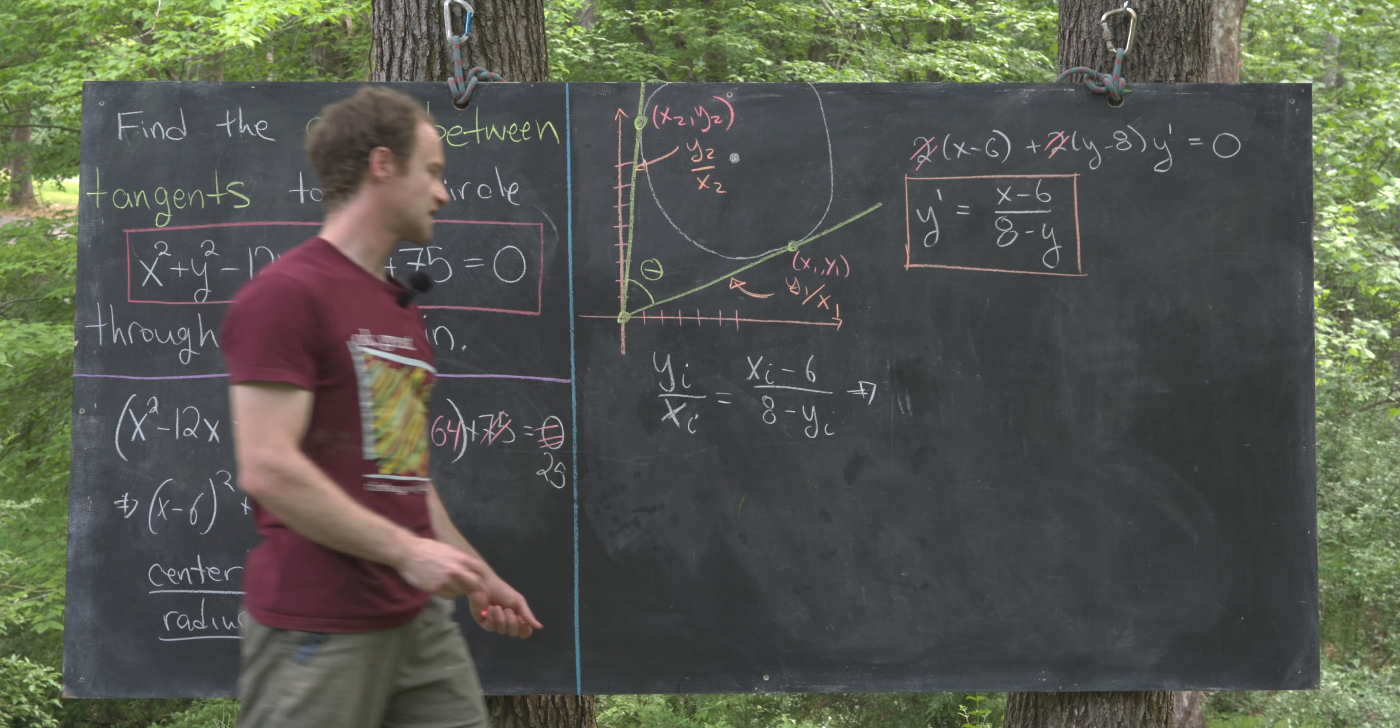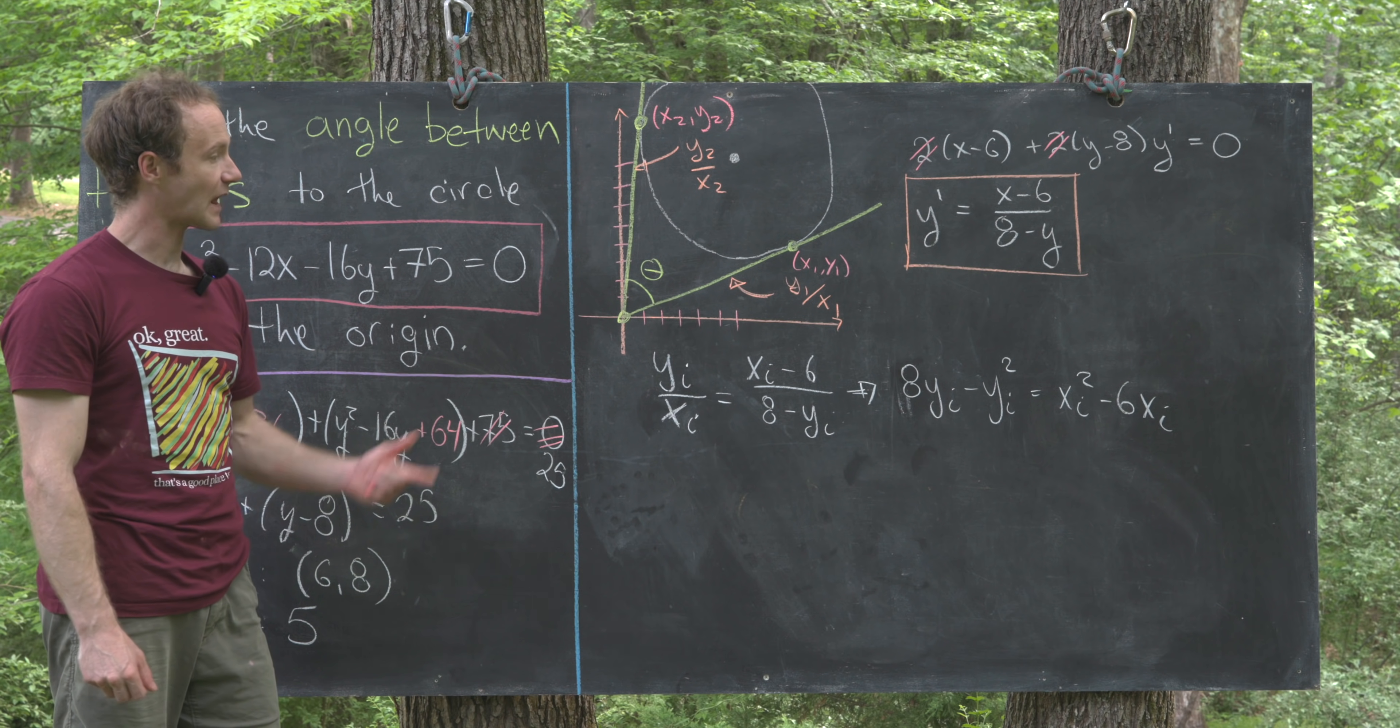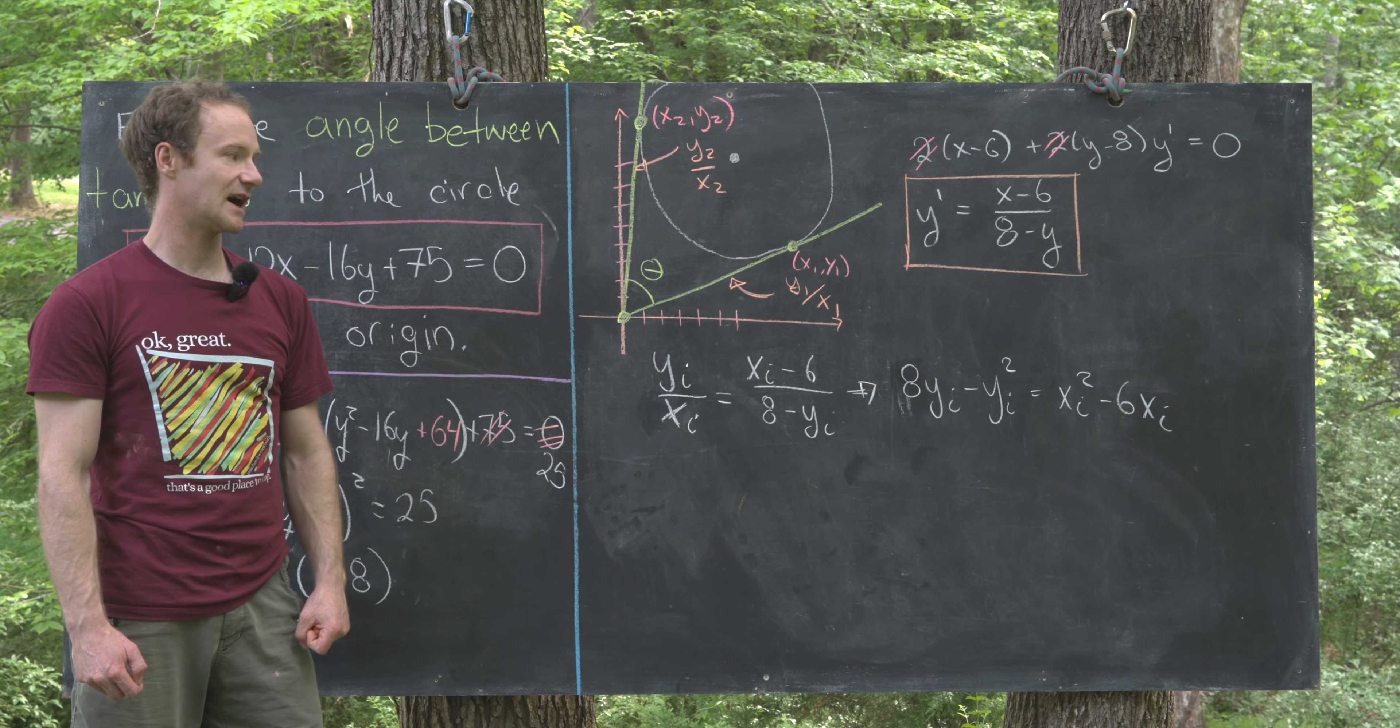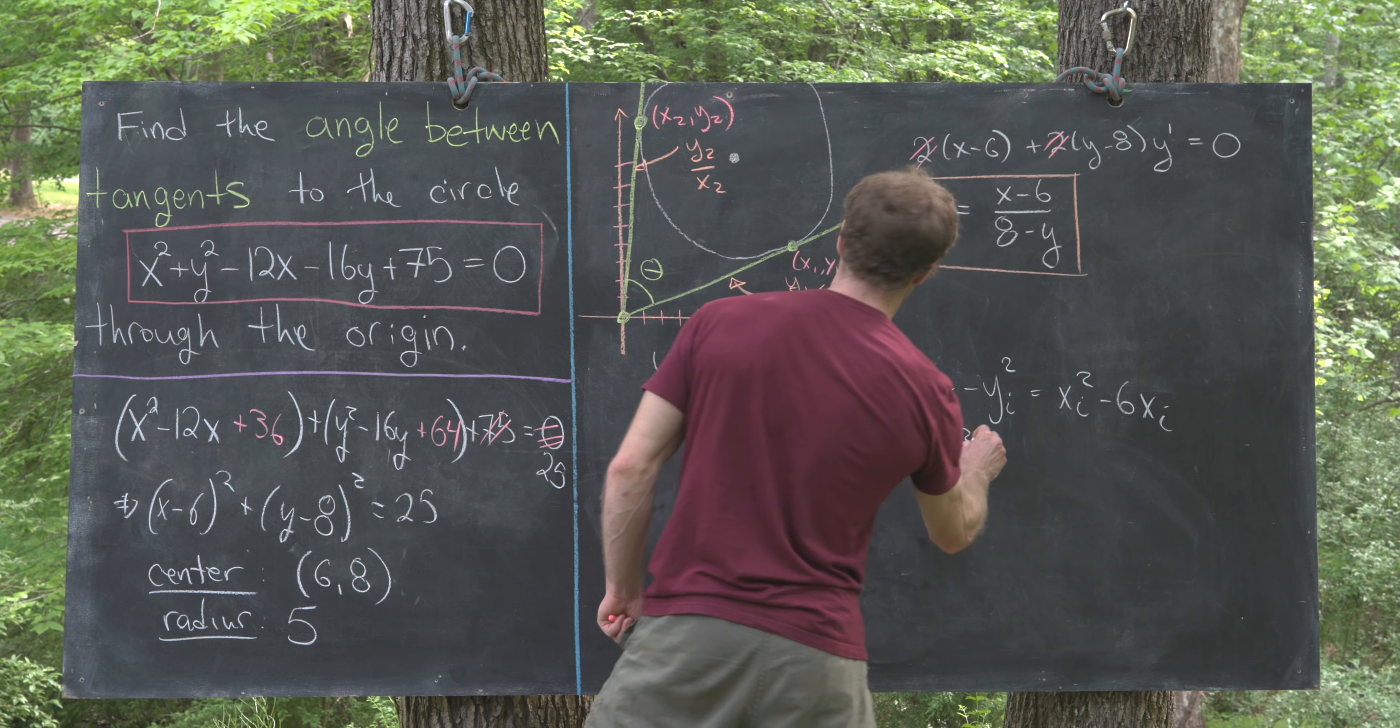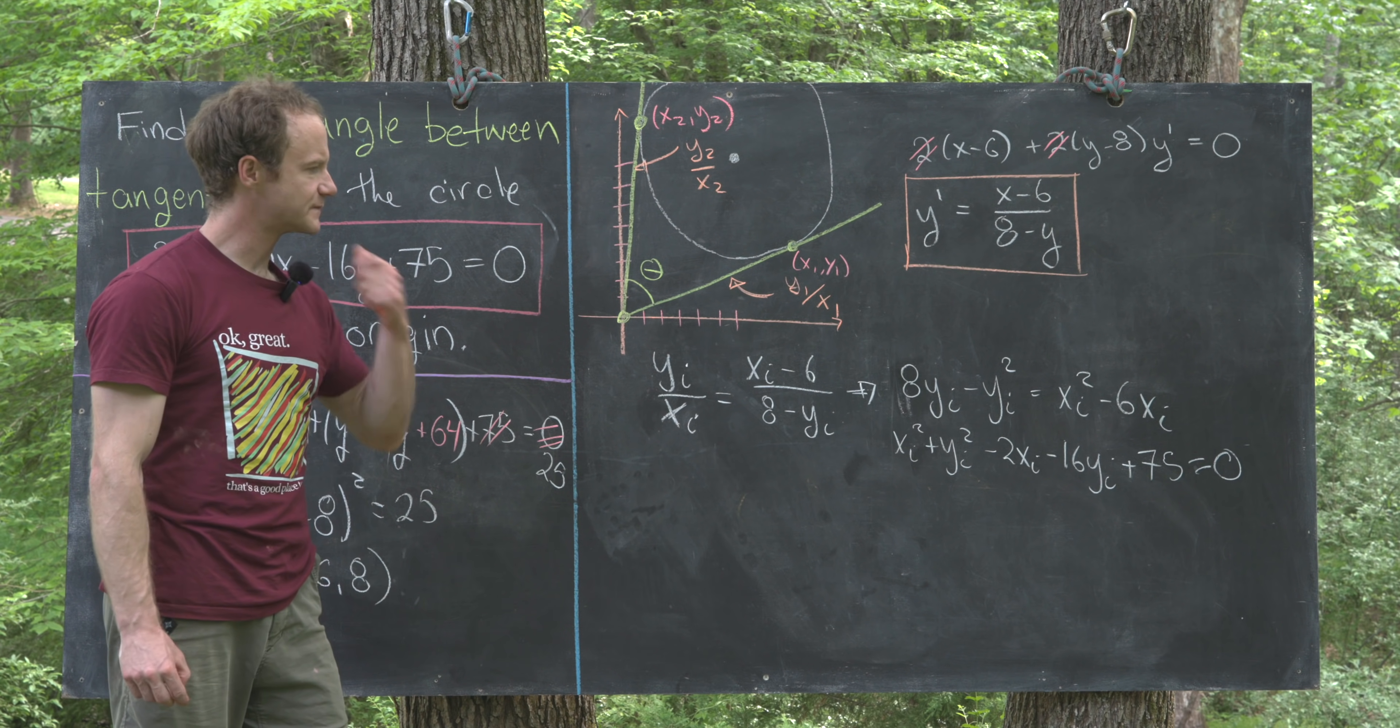Cross multiplying, we'll have 8 times yi minus yi squared equals xi squared minus 6 times xi. That may not seem super helpful because we only have one equation but two unknowns. But notice that x1, y1 and x2, y2—in other words, xi, yi—is also on the circle. That gives us another equation that xi, yi has to satisfy, and that would be this one right here. We also have xi squared plus yi squared minus 12xi minus 16yi plus 75 equals 0. Our slope argument gave us this equation; the fact that we're on the circle gave us this second equation.